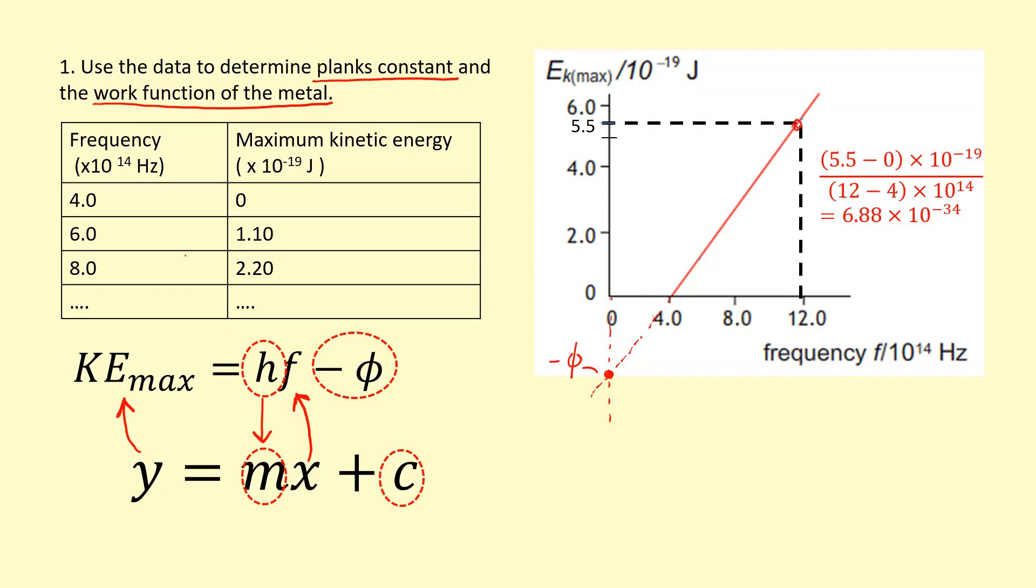So in this case, just being very careful, take these two points here. Just change in y over change in x, and that's giving us a number that's very close to Planck's constant. Of course, there's going to be some error.